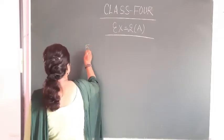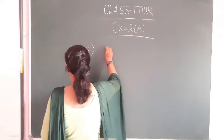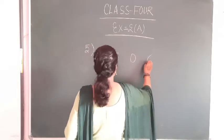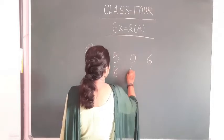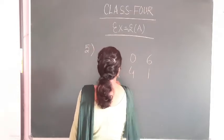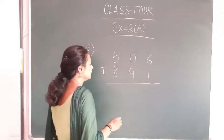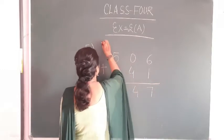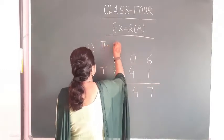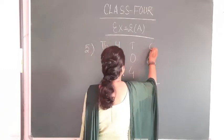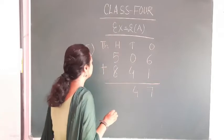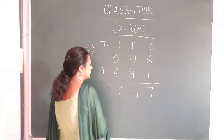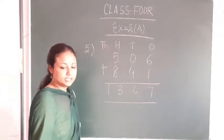Then question number 5. This is 5, 0, 6, 8 plus 4, 1. So then 6 plus 1 is 7. This is 4. The places are: 1000s, 100s, 10s, and 1s. 8 plus 5 — this is 13. So then 40, 7.